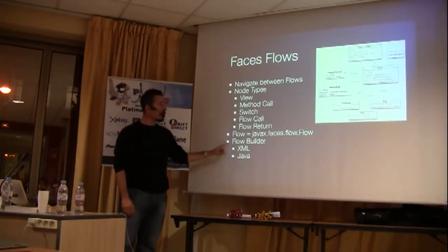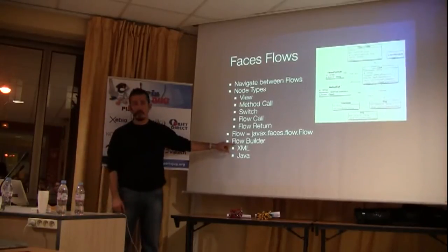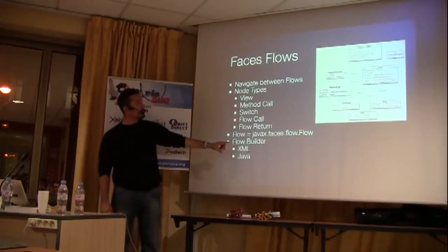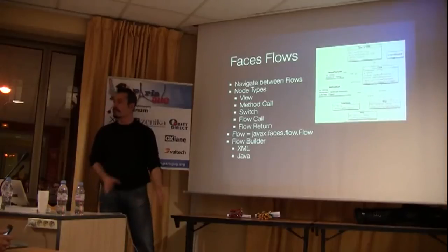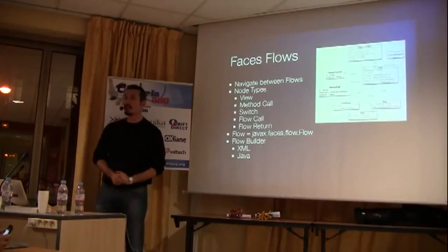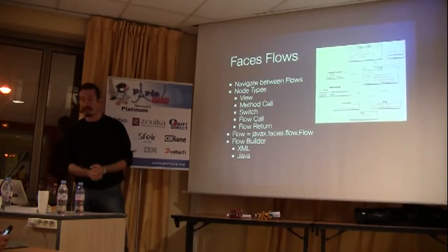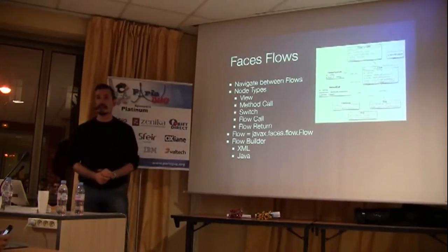So the important thing is how do we build this thing? There are two alternatives right now. This one's implemented — XML. So if you are familiar with Webflow, it's the same thing — XML, you have a separate XML file. The first implementation was putting that XML inside f:metadata, but the page became huge. So now it's separate. There's also a Java builder planned. In case you don't want to use XML — JSF is trying to stay away from XML from now on — the alternative would be the Java-based flow builder.